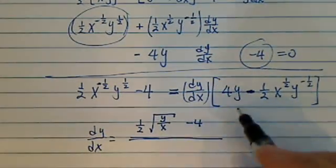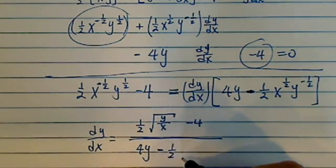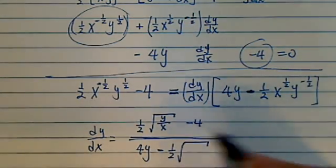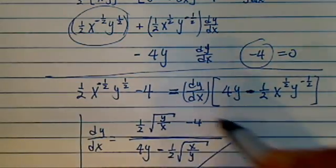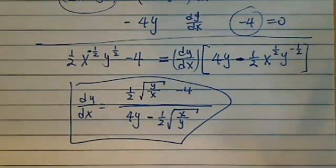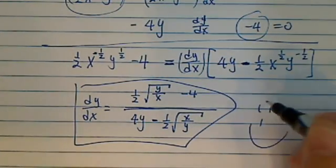Divide it by, let's put this one on the 4y, minus half, and the radical root. Here I have x on the top, y on the bottom. All right, and it's a little messy, but it's not hard. You just have to keep track of what you're doing. So have a confident day.